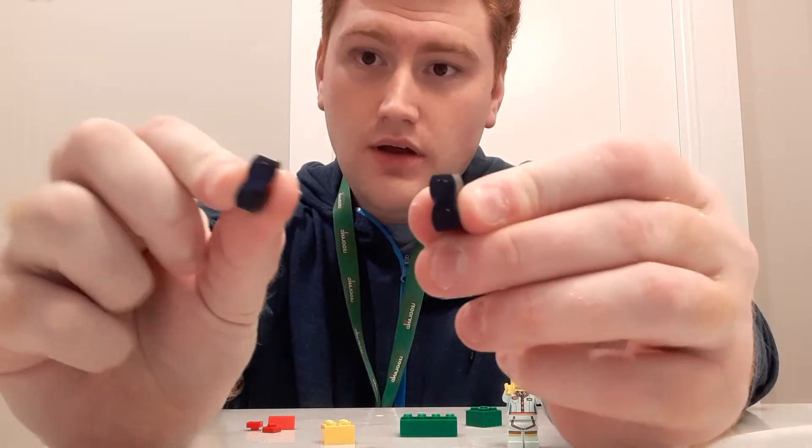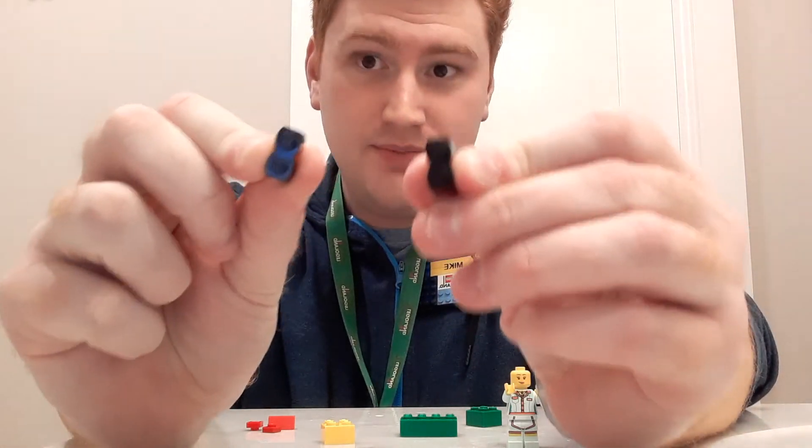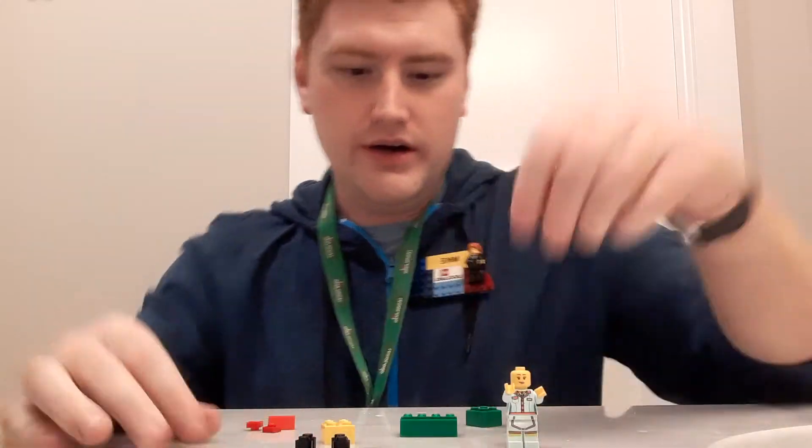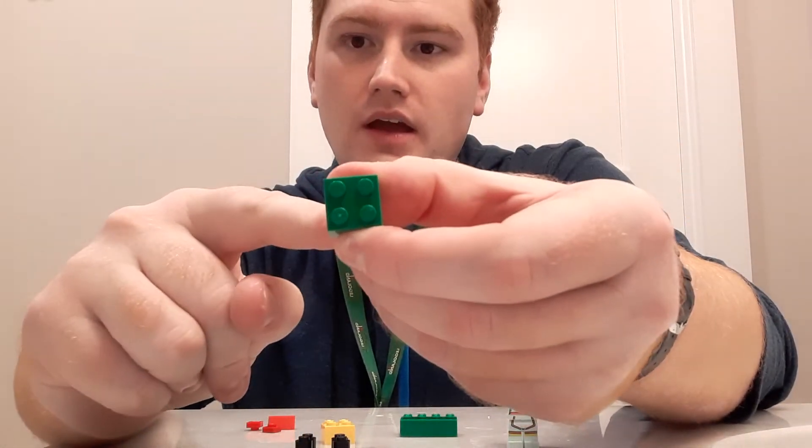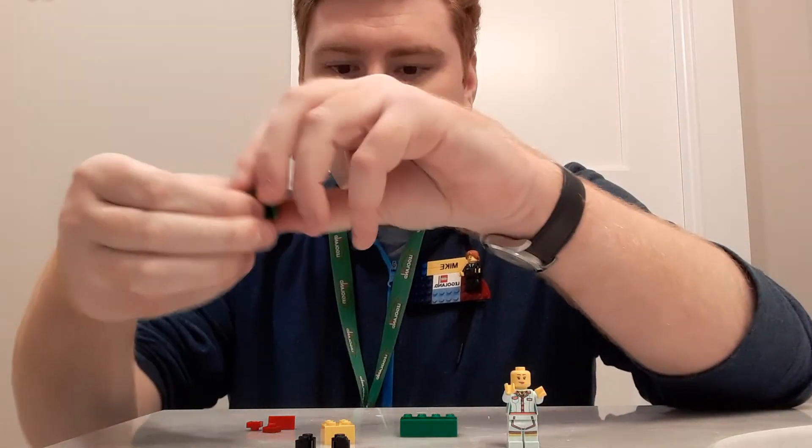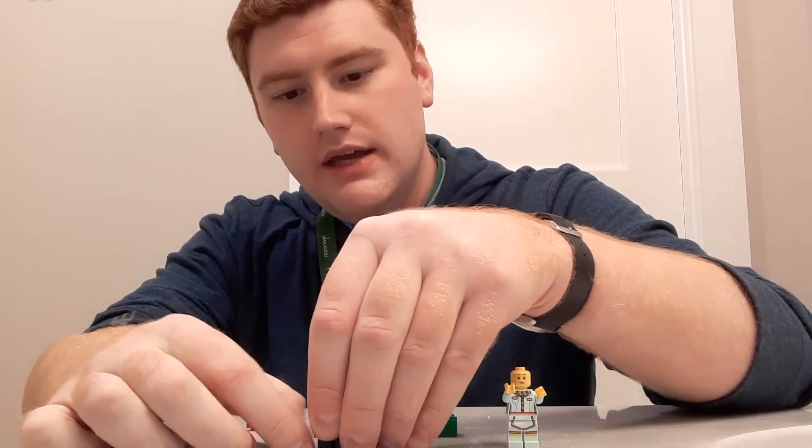We're going to need two 1x2s. These are black, but they can be any color you want, as long as they're the same color. Then, we are going to need a 2x2, so our square brick. Now this one is green, but you can use any color you want.